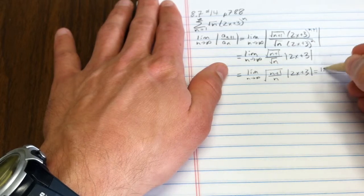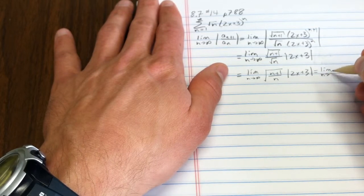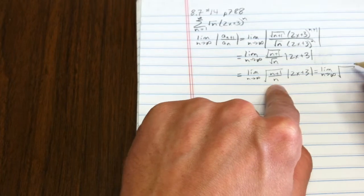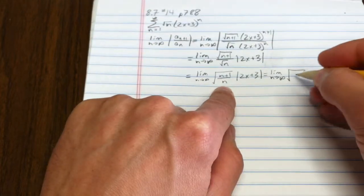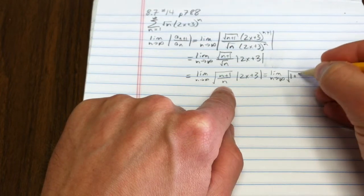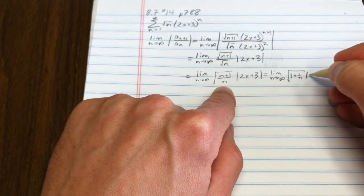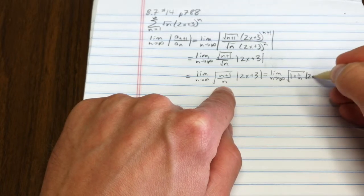2x plus 3. Well, and if you think about this, that's the square root. Since you have a single denominator, you can divide that up. That's just 1 plus 1 over n, all times the absolute value of 2x plus 3.